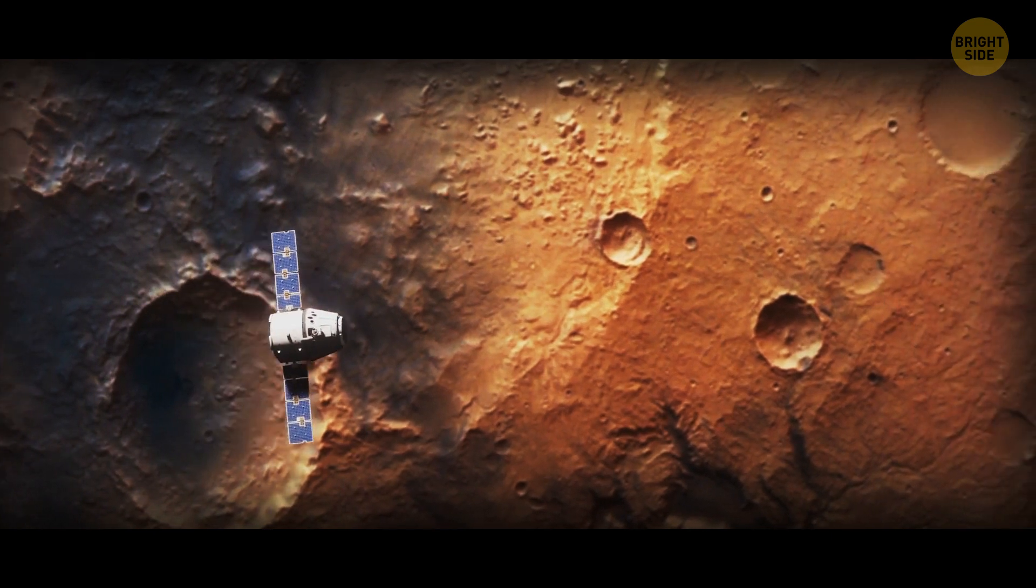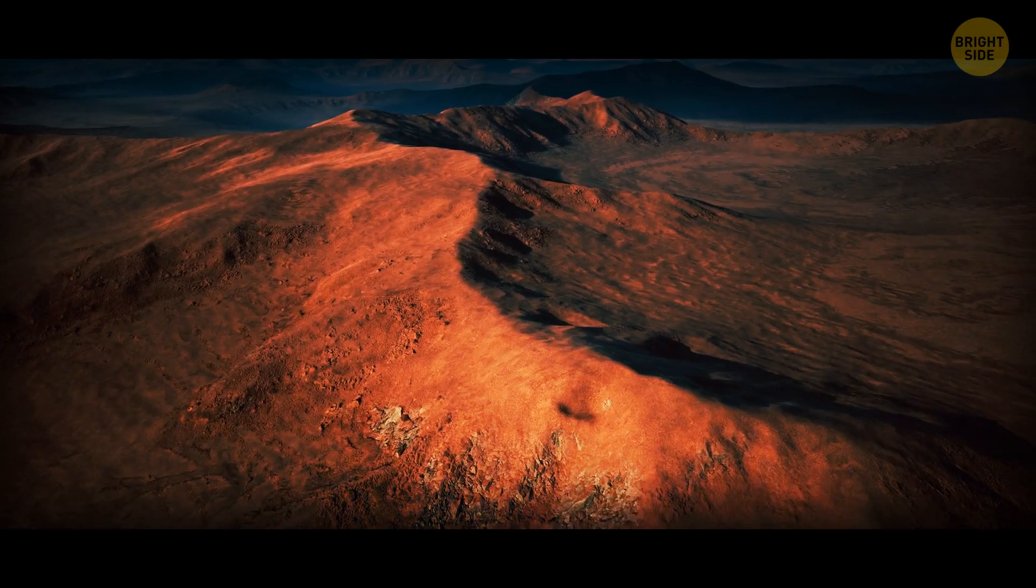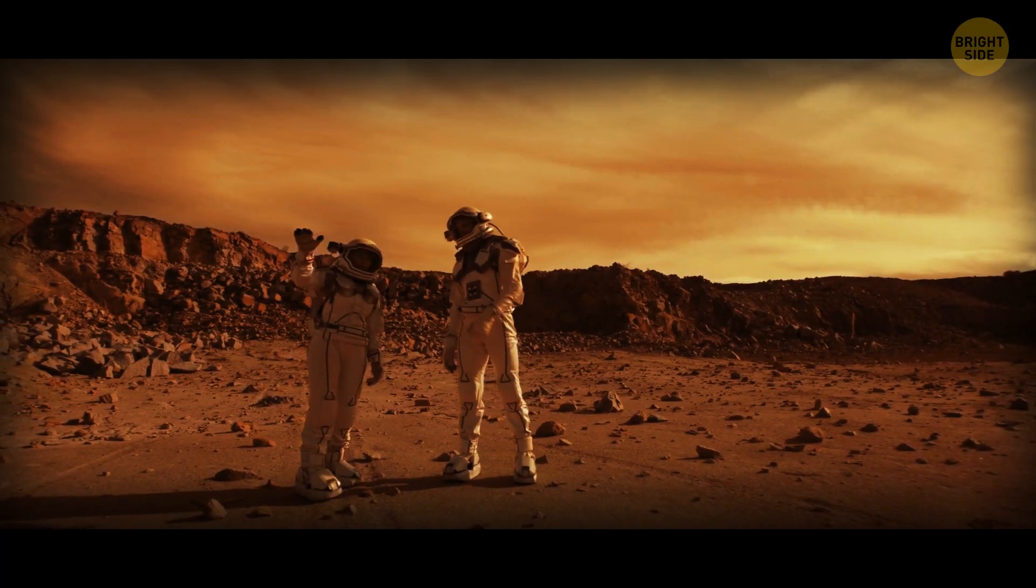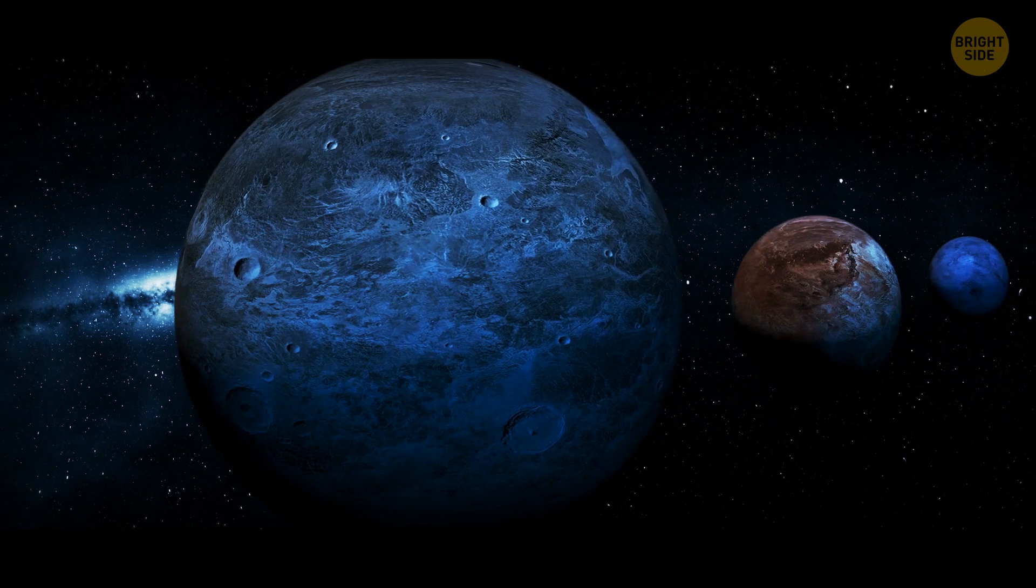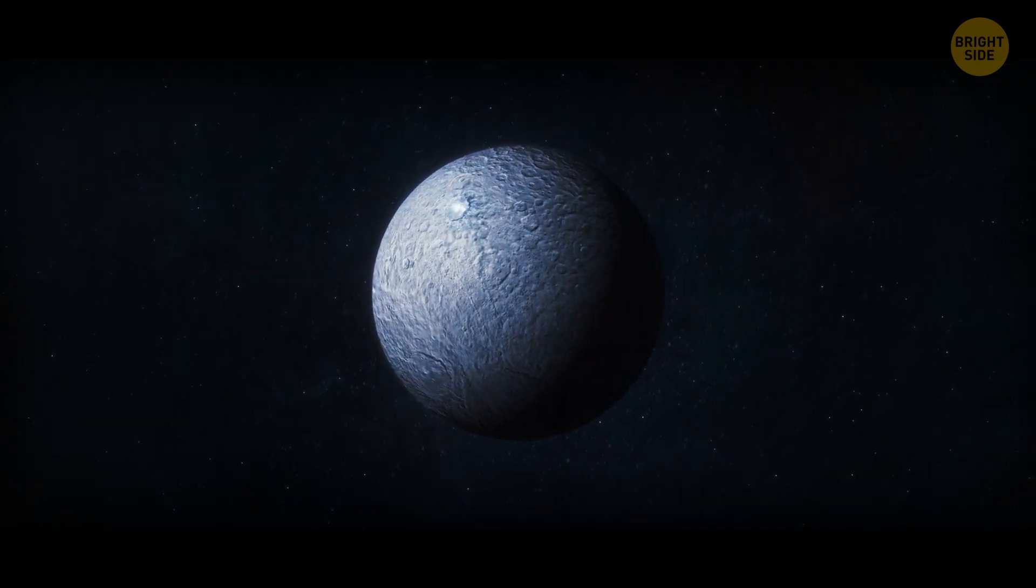On Mars, you'd find ice at its poles, under the surface dust and in frost. It might not be enough to support human colonies up there, but it's still something. Some other bodies in our solar system also contain ice, like the dwarf planet Ceres and one of Saturn's moons.